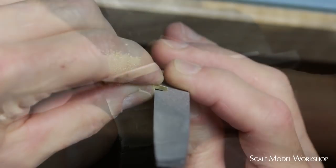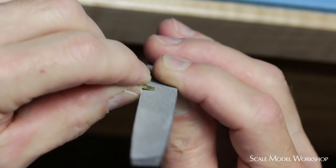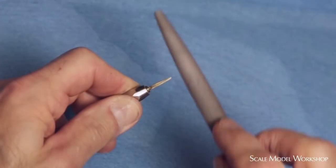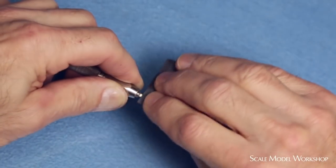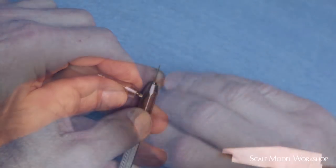When you have it to the thickness you want, you then shape the profile. Any needed airfoil can be developed with a few passes of a file and then finished off with sandpaper.